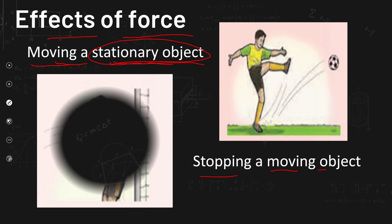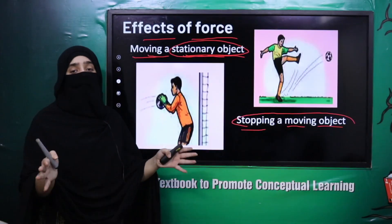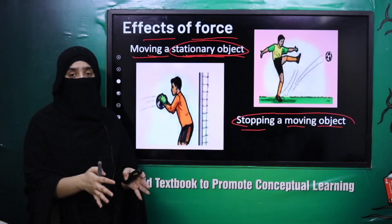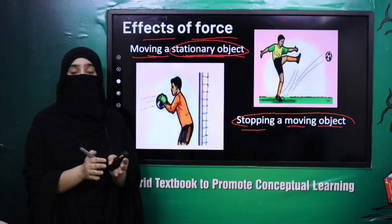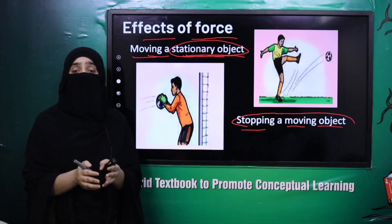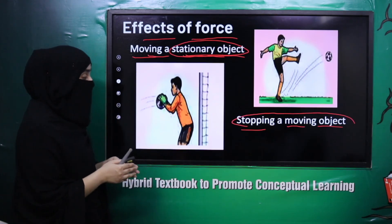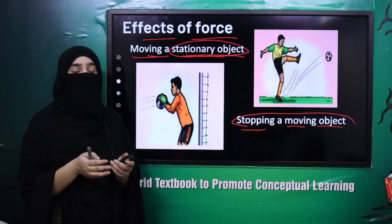Then, stopping a moving object. Jo object move kar raha hota hai, jab hum uus pe force exert karte hain aur usko stop karne ki koshish karte hain, to force ka effect hota hai ki wo object movement se ruk jaata hai. So force kisi bhi object ko stop karti hai from movement.